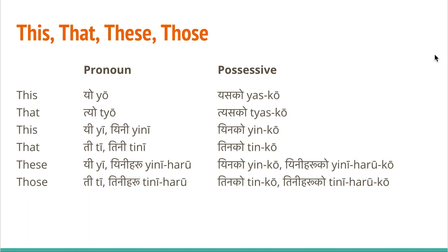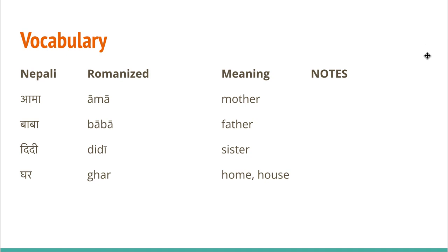For the demonstrative pronouns — this, that, these, those: 'yo' becomes 'yasko', 'tyo' becomes 'tyesko', 'iini' becomes 'inko', 'tiini' becomes 'teinko', 'ini' becomes 'inko', 'iniharu' becomes 'iniharu ko', 'ti' becomes 'teinko', and 'teini haru' becomes 'teini haru ko'. For a female object, 'ko' becomes 'ki', and for a plural or respectable object, 'ko' is replaced by 'ka'. This is the vocabulary covered in this video.